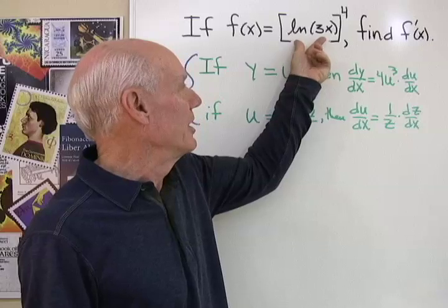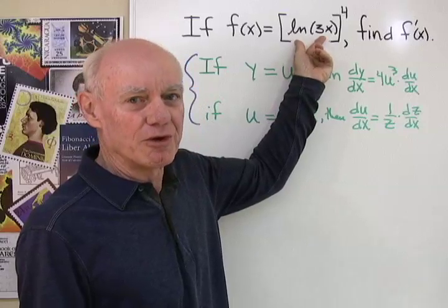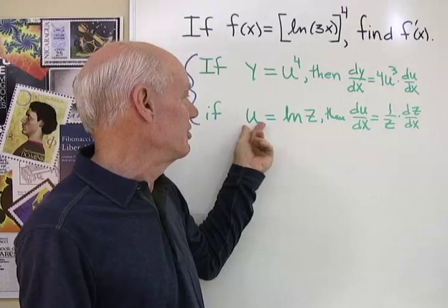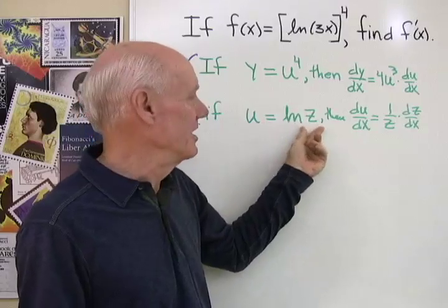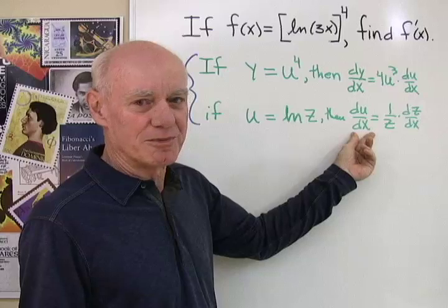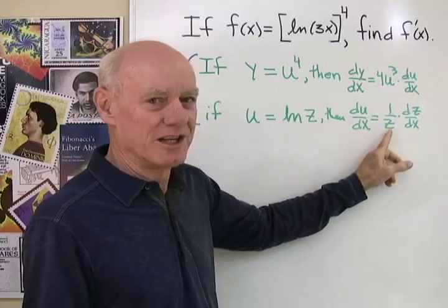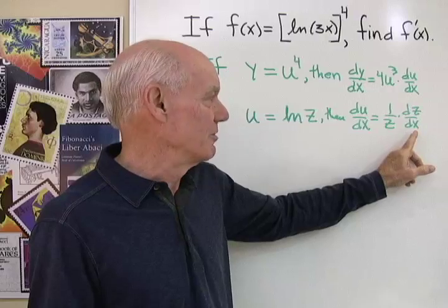And then I look at u and it looks like some function logarithm of z. So if I say u is equal to the log of z, then the derivative of u with respect to x is 1 over z times the derivative of z with respect to x.